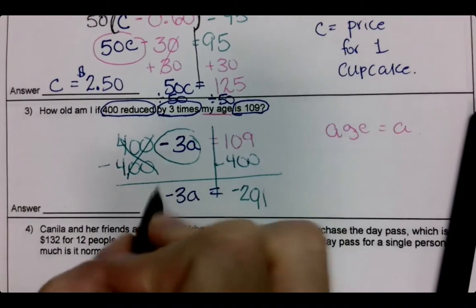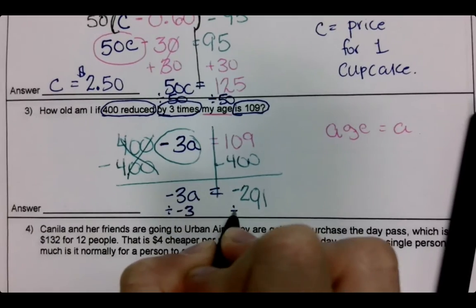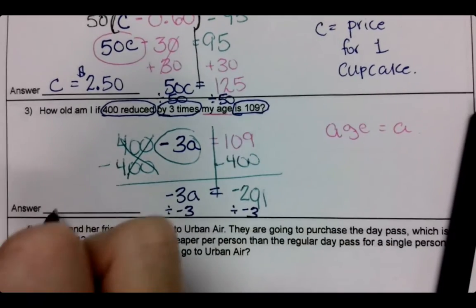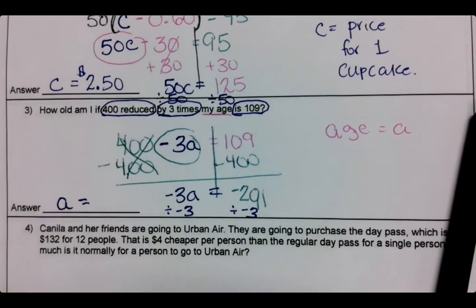And then we would divide by negative three. Make sure you take that negative with it, right? And so my age is...